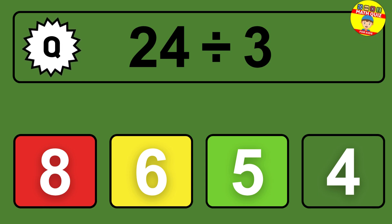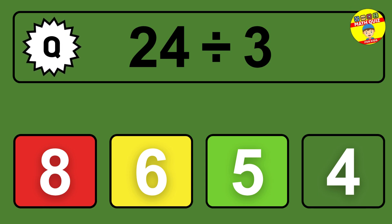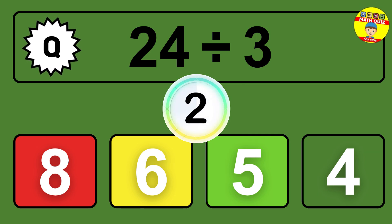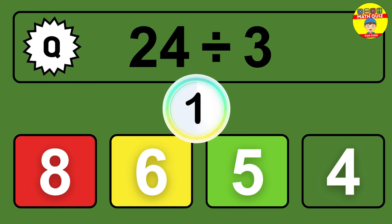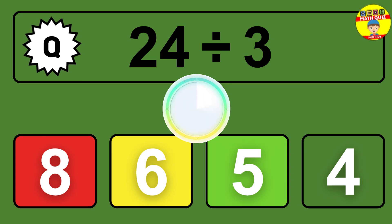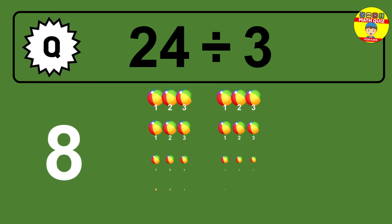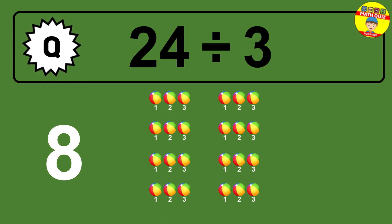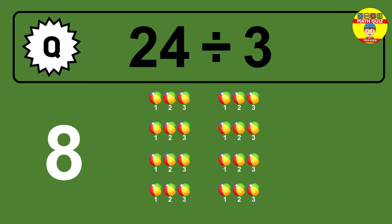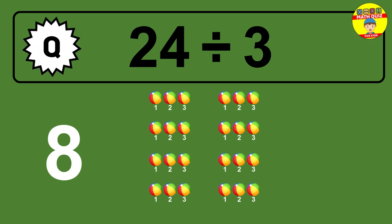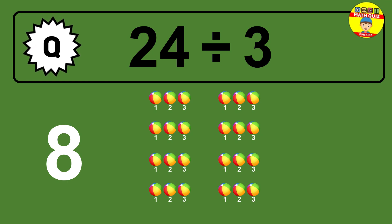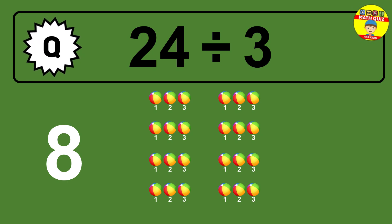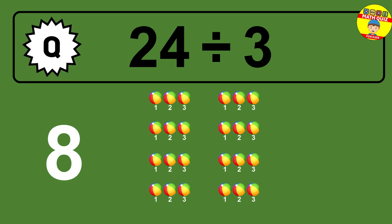24 divided by 3 — time to think. Let's go to the solution. Divide the number 24 by 3. Each group contains 3 units, so dividing 24 by 3 results in 8 equal groups. Thus, the result is 24 divided by 3 equals 8.